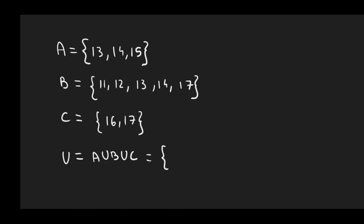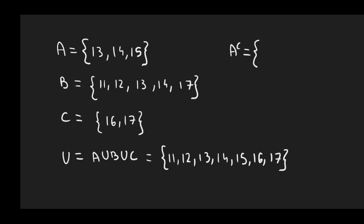The universal set turns out to be {11, 12, 13, 14, 15, 16 and 17}. So now, how can we find the complement of A? We remove from the universal set 13, 14 and 15. So we are left with 11, 12, 16 and 17.